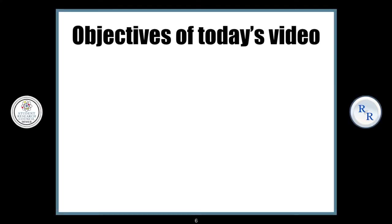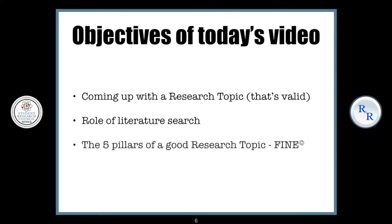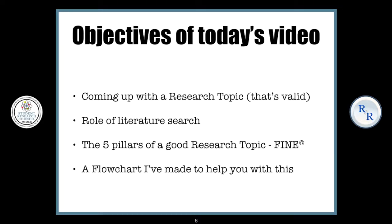The objectives of today's video are: coming up with a research topic that's valid, the role of literature search in finding a research topic, the five pillars of a good research topic — I've come up with this, so copyright — and a flowchart that I've made to help you with this very difficult task of coming up with a research topic.